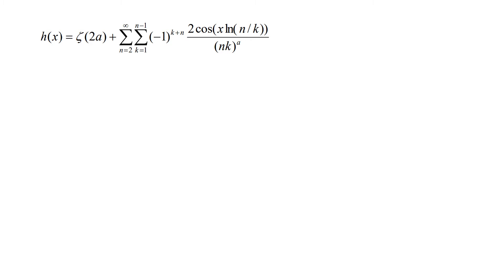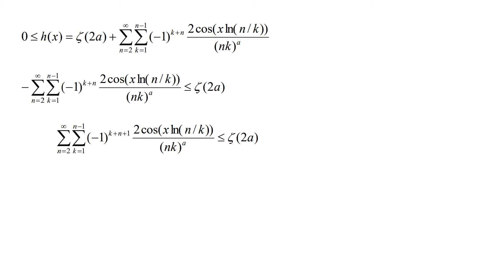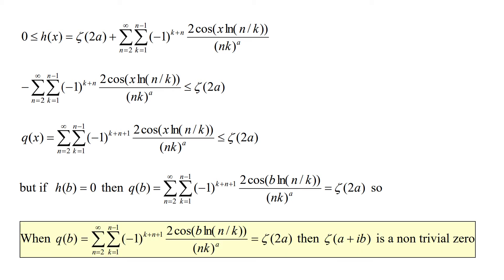Let's go back to our h of x formula. h of x is always greater than or equal to zero. Let's move the summation to the left side of the inner equation and insert the minus one inside the summation formula. We will call this new summation formula q of x. q of x is always equal to or smaller than zeta of 2a. But if h of b equals zero, then q of b equals zeta of 2a. So when q of b equals zeta of 2a, the point zeta of a plus ib is a non-trivial zero.